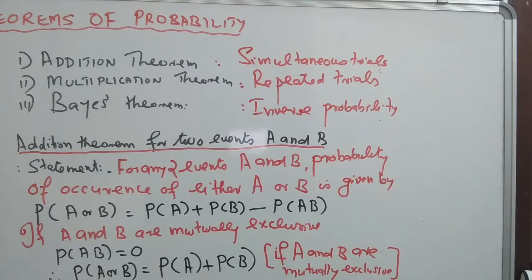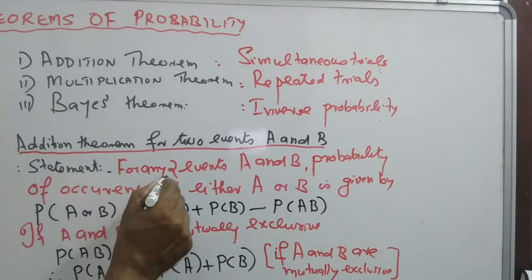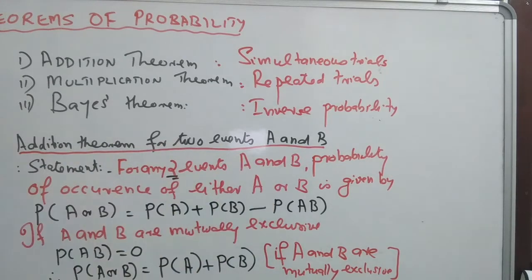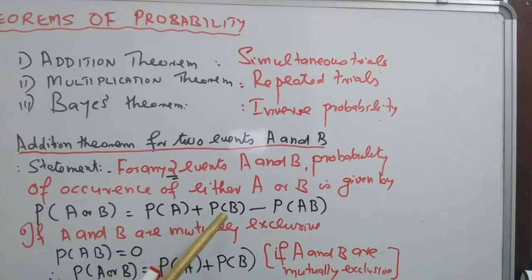In simple terms, we define the addition theorem for two events A and B. This is sufficient for students of the management faculty. The statement is: for any two events A and B, the probability of occurrence of either A or B is given by P of A or B equals P of A plus P of B minus P of AB. This is the addition theorem for two events A and B.